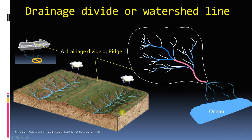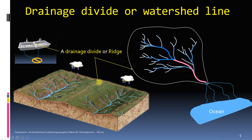Let us see this in another diagram. These are two different catchments which are connected to each other. The line which divides these watersheds is called a drainage divide. You can see two catchment areas and a ridge here.